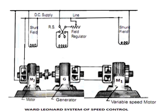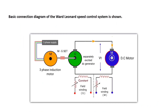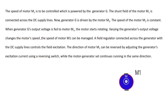We can also use a three-phase induction motor for this purpose, which is coupled to a separately excited DC generator, and the supply from that generator is given to the DC motor whose speed is to be controlled.